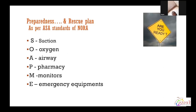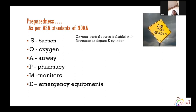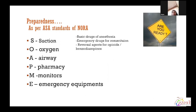The next goal is preparedness and rescue plan. As per ASA standards for NORA, the basic requirement for cases is remembered with the simple mnemonic SOAPME. S stands for suction — proper size suction catheters and functioning suction apparatus. O is for oxygen — central oxygen source with flow meter and spare E-cylinder. A is for all airway equipment of appropriate size for the age and weight of the patient, a difficult airway cart, self-inflatable ventilating Ambu bag, and MRI-compatible laryngoscope set. P stands for pharmacy — basic drugs for anesthesia.